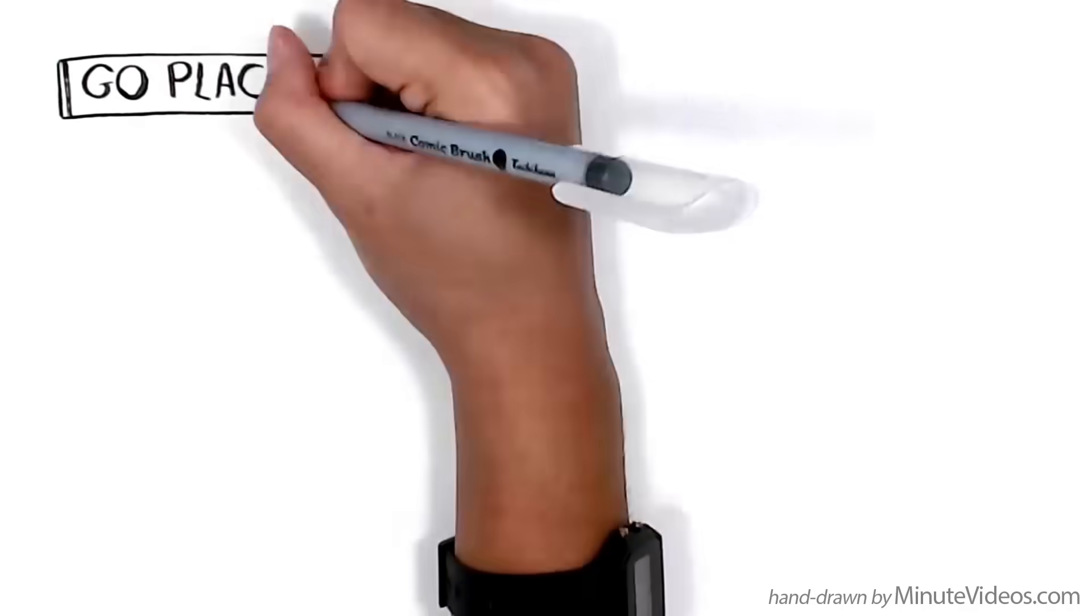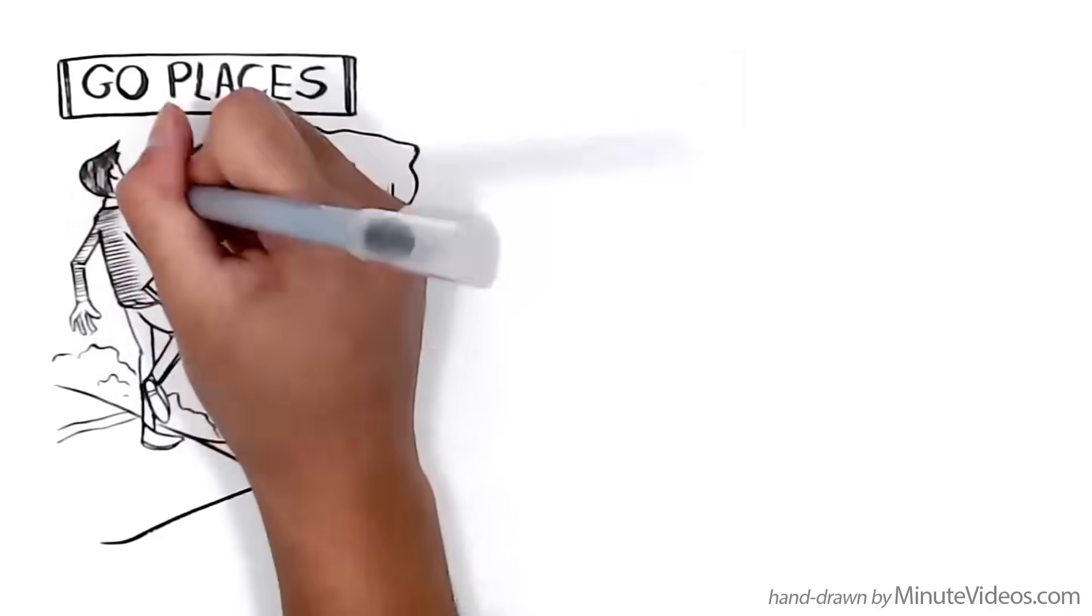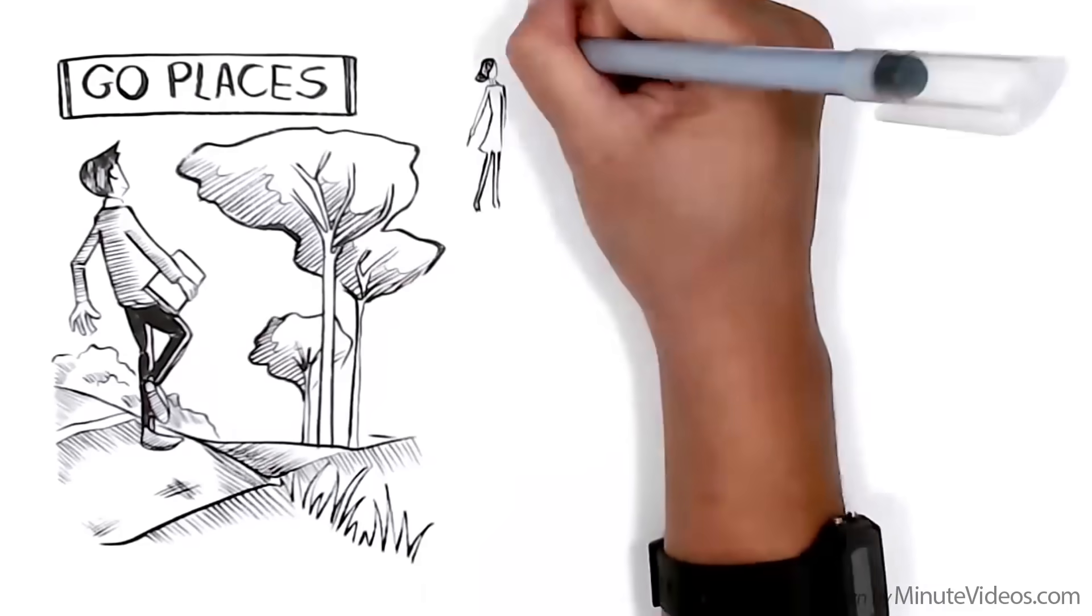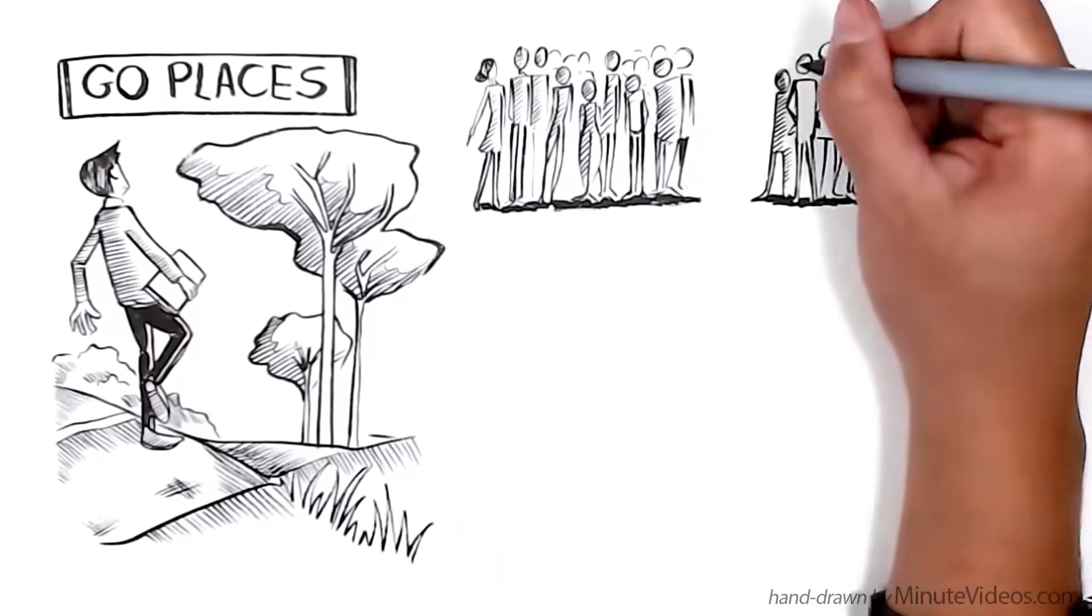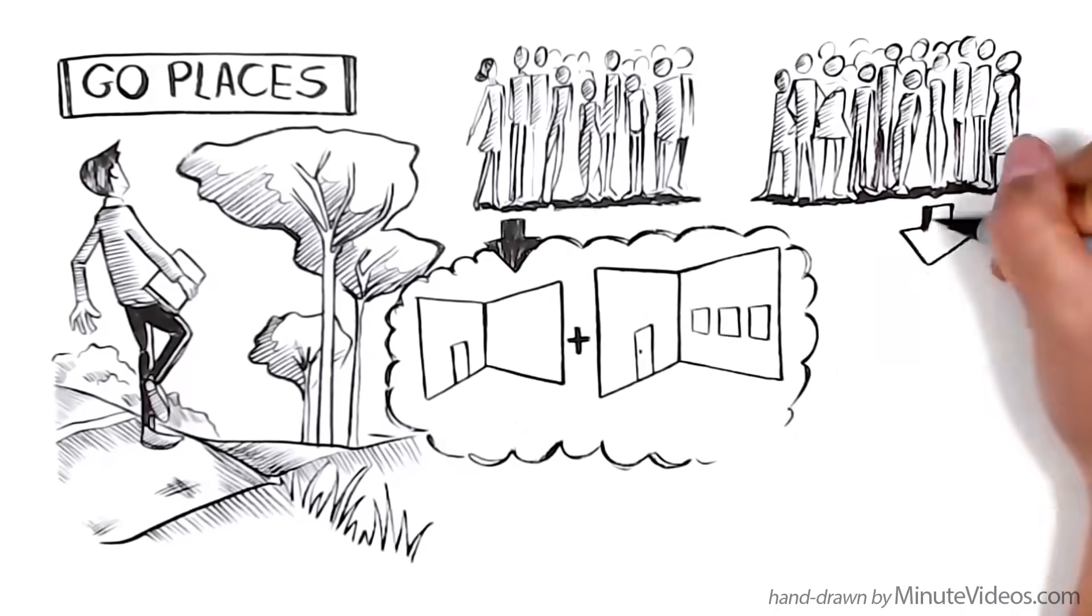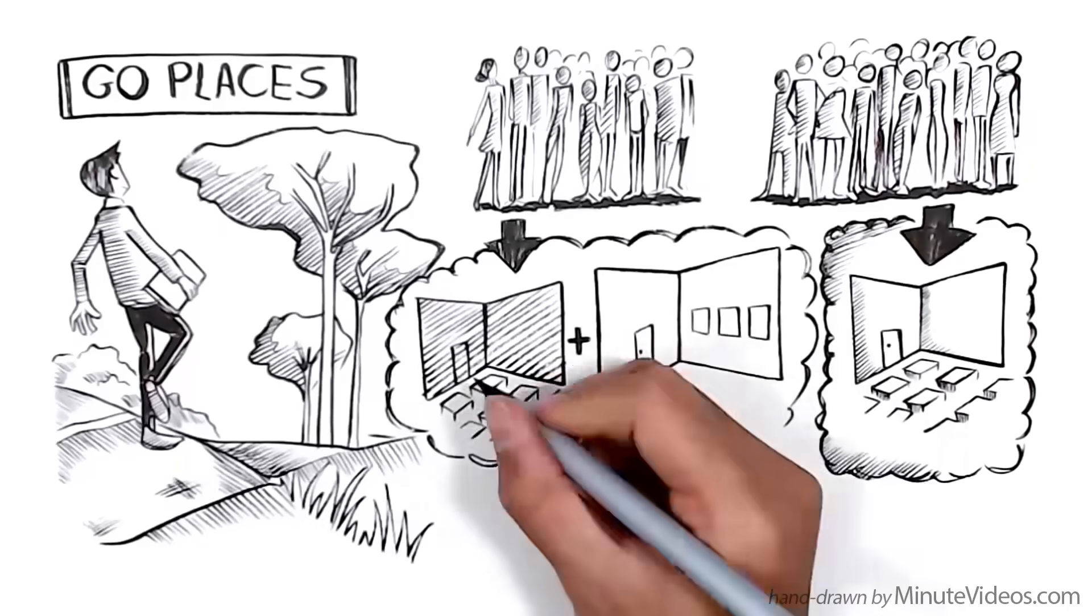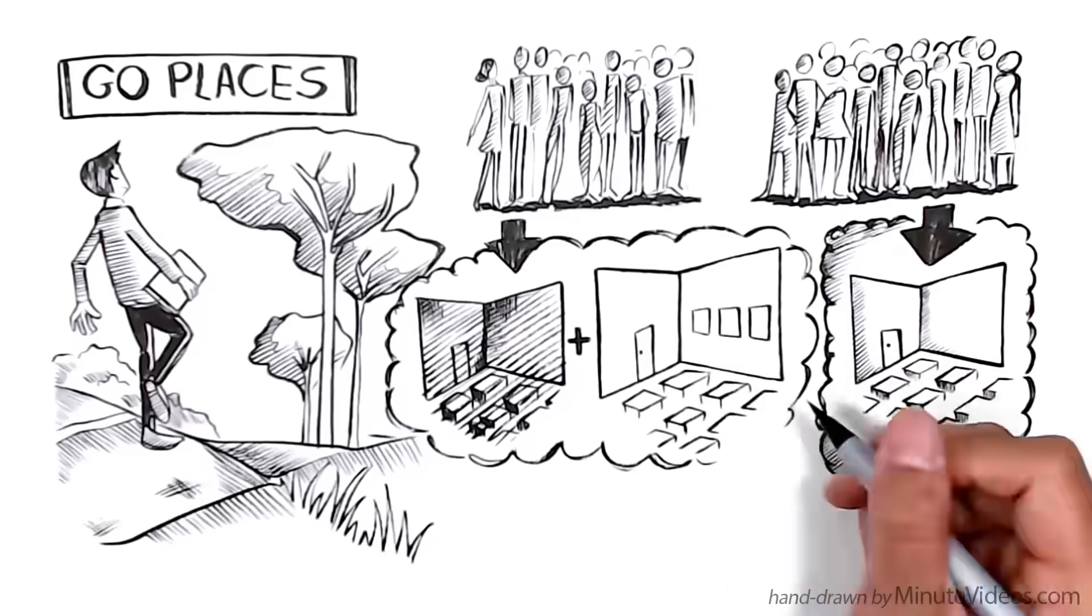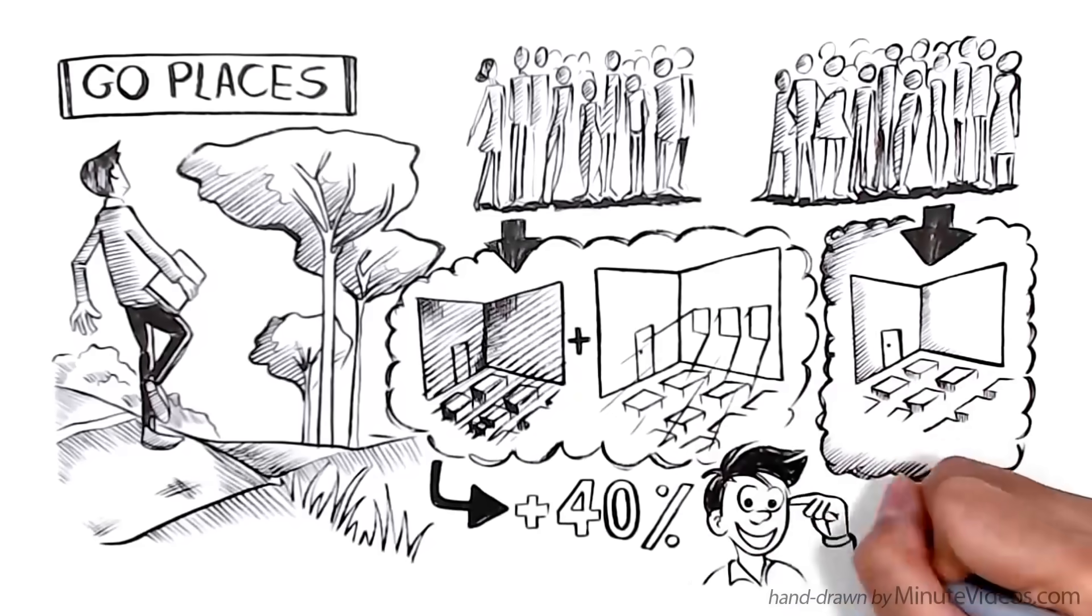Go places. You can create deeper memories of a subject by learning in a richer environment that offers more visual clues. In an experiment, two groups of students had to remember random words. One group changed the classroom while studying, the other didn't. The group that studied in two different rooms, one was small and windowless, the other big and bright, was 40% more likely to recall the words later.